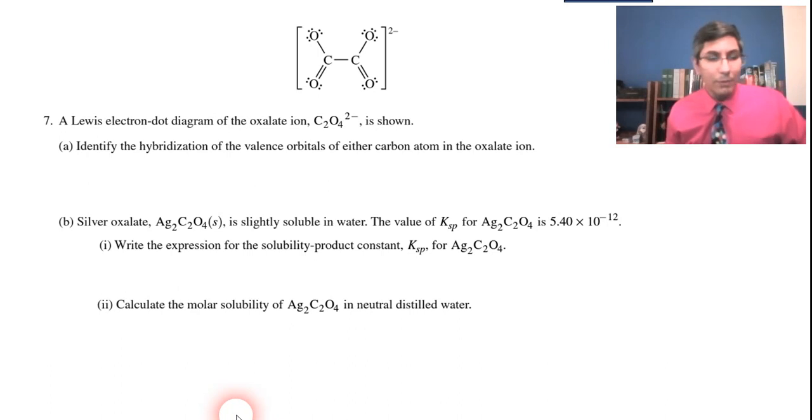Number seven, which people have been saying has been a pretty tough question, so we're going to take a look at number seven. This is a four-point question. Here we have a Lewis electron dot diagram of the oxalate ion, C2O4 2-.